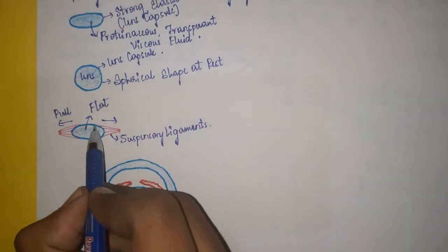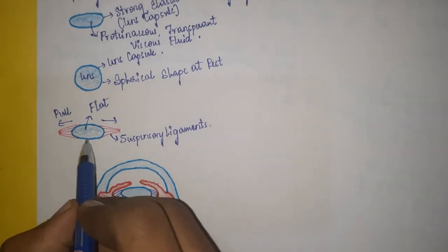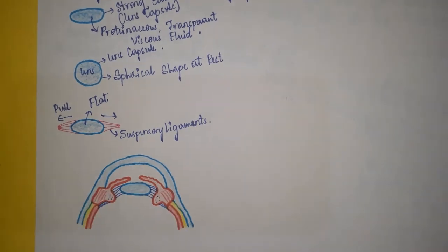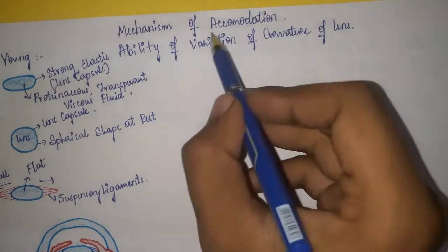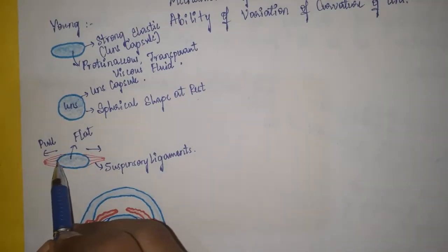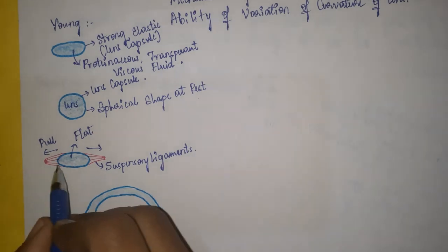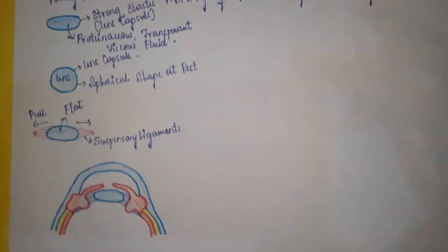This is the anterior surface of the lens and this is the posterior surface. Remember carefully: in accommodation, only the curvature of the anterior surface will change. The curvature of the posterior surface almost remains constant.